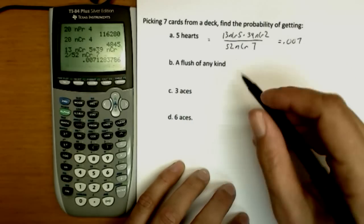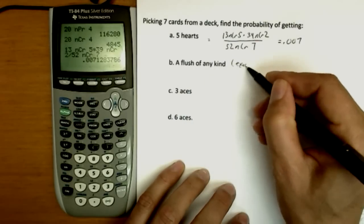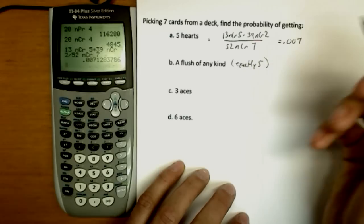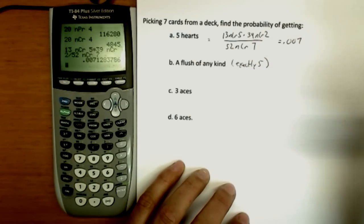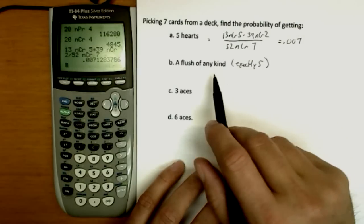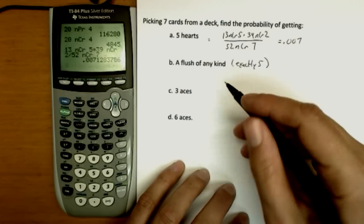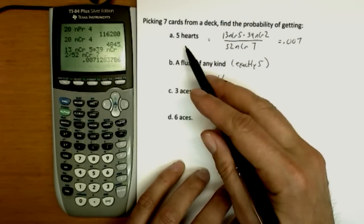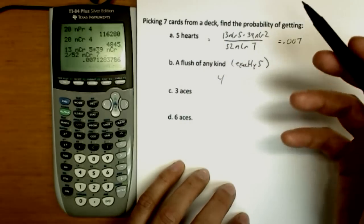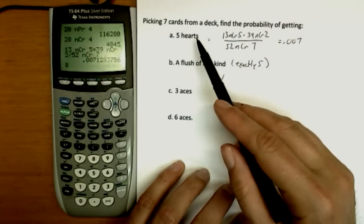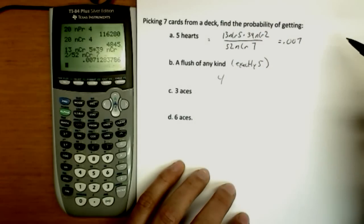Now a flush of any kind. I'm going to say exactly five. We could do flushes where you got six hearts and seven hearts, which would mean poker, since I just came back from Vegas, the math conference in Vegas. But for now, we'll just say exactly five. There will be four different ways of getting this. This is a flush in hearts, so there's spades, clubs, and diamonds. But you could also get six hearts or seven hearts, and we'd have to do a couple more calculations.